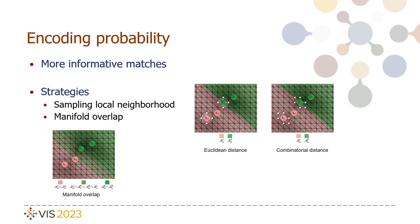The key difference in our proposed strategies is that the sampling is a local approach while the manifold overlap is a global approach.